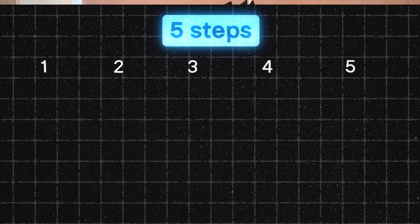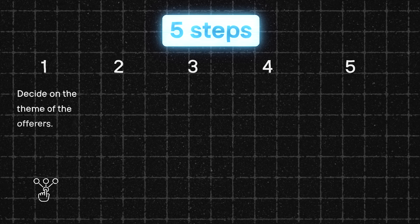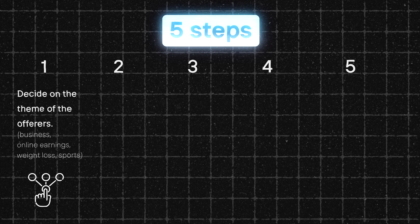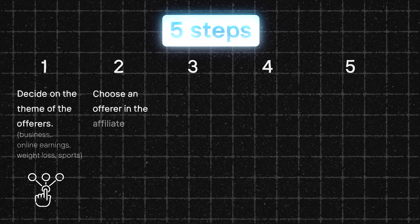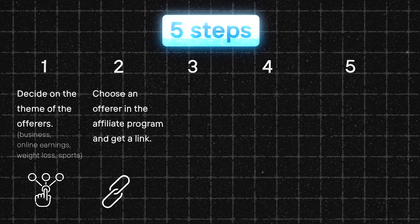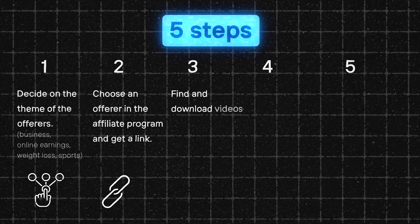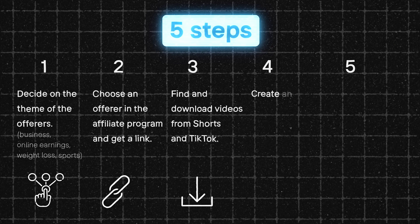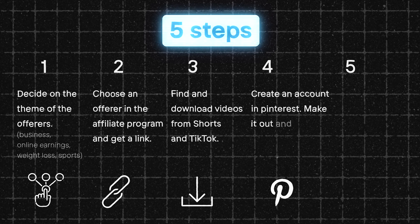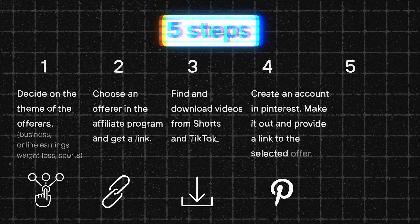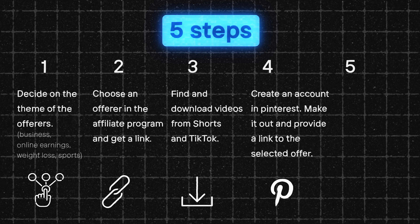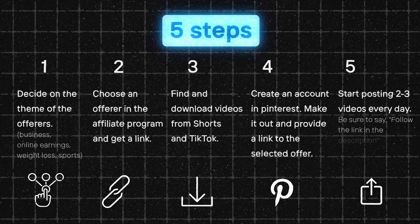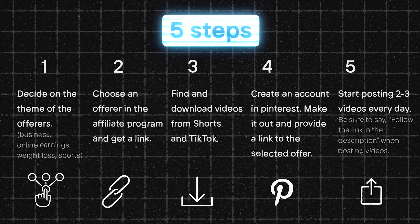Here are five steps you need to take. Step one: decide on the theme of your offers — business, online earnings, weight loss, or sport. Step two: choose an offer in an affiliate program and get a link. Step three: find and download videos from YouTube Shorts and TikTok. Step four: create an account on Pinterest, set it up, and provide a link to the selected offer. Step five: start posting two or three videos every day. Be sure to say 'follow the link in the description' when posting videos.